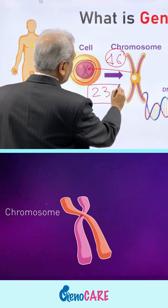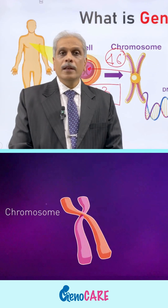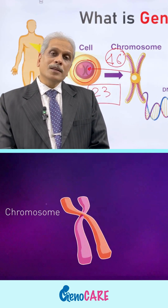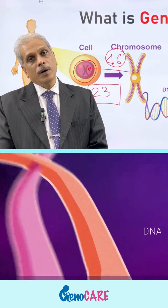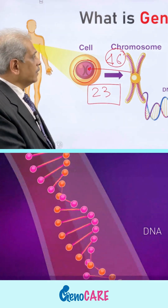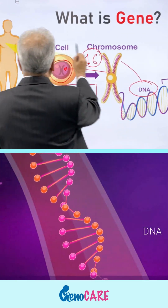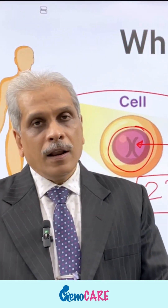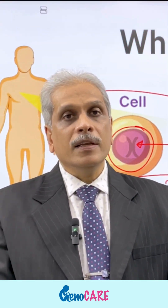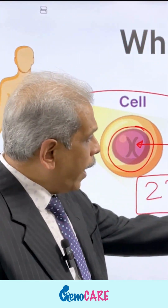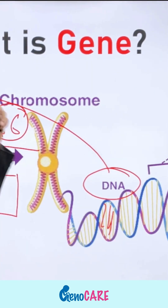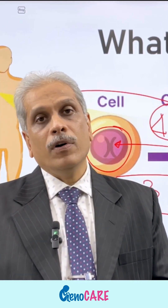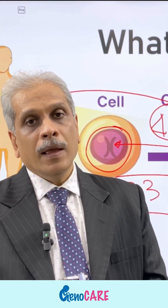We define this as 23 pairs of chromosomes in each nucleus. These chromosomes are nothing but the DNA of the organism. Everything about how we are is encoded on this DNA, which is responsible for each and every functioning and expression of a human being.